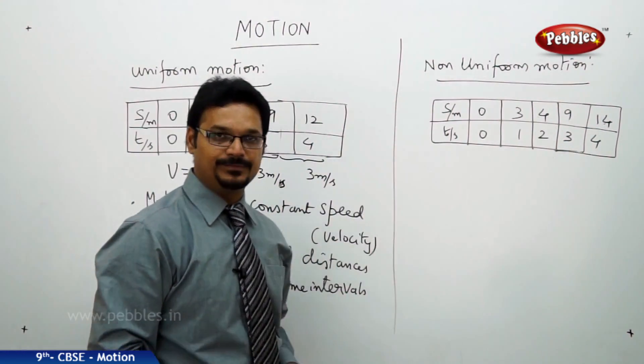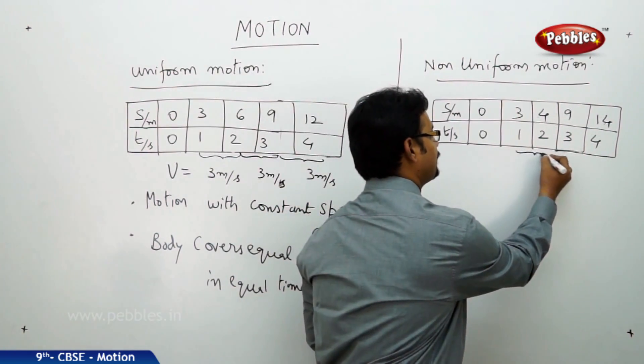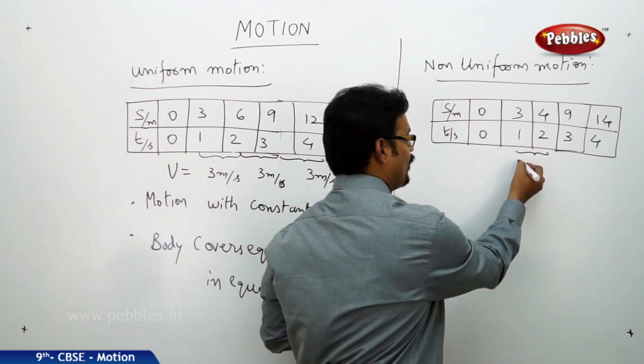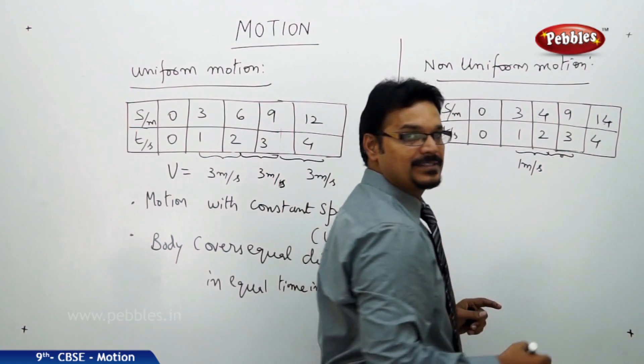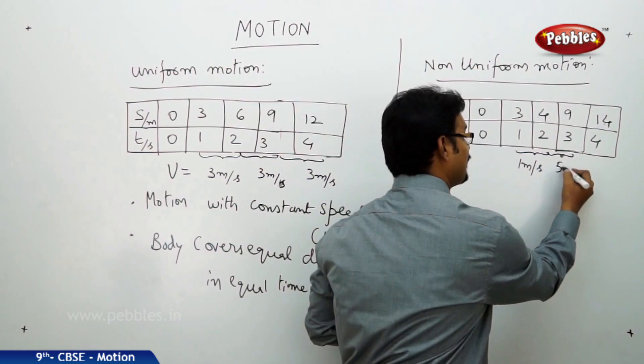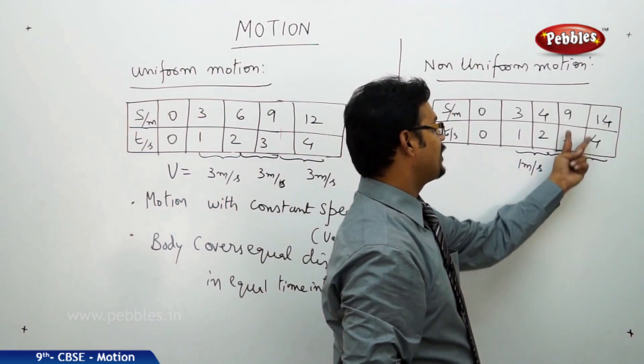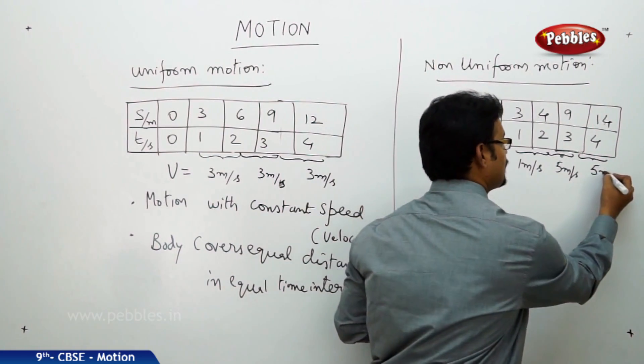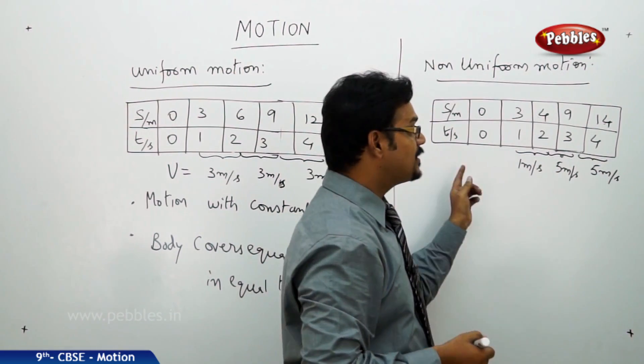Now, coming to non-uniform motion, the opposite of uniform motion. See the table carefully. In 1 to 2 seconds, the distance traveled, 3 meters to 4 meters. The distance traveled is 1 meter. 1 meter in 1 second. Now, from 2 seconds to 3 seconds, the distance traveled is 4 to 9. It is 9 minus 4, 5 meters in 1 second. Now, from 3 to 4, the distance traveled, 14 minus 9, which is 5 meters in 1 second. So, what happened here, speed is not constant. Speed is changing.